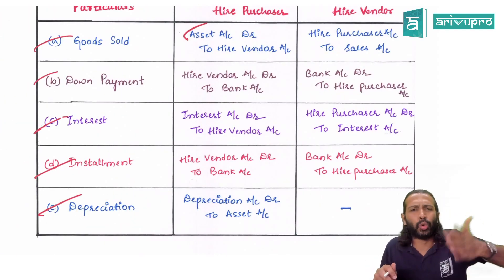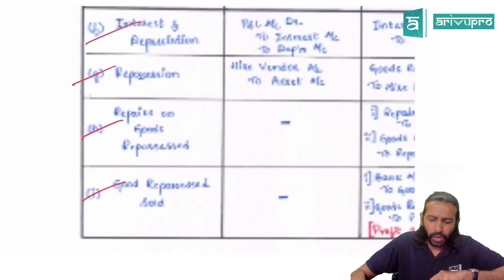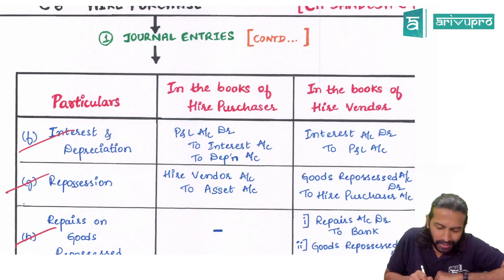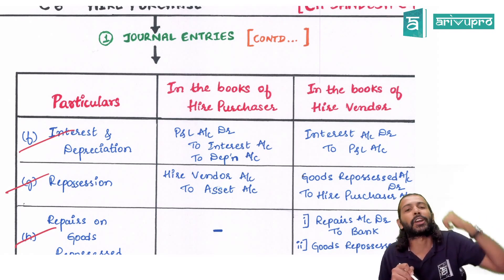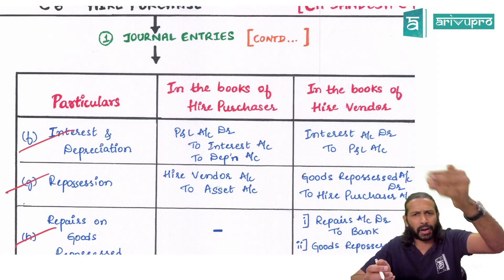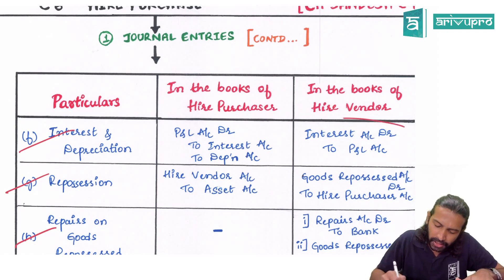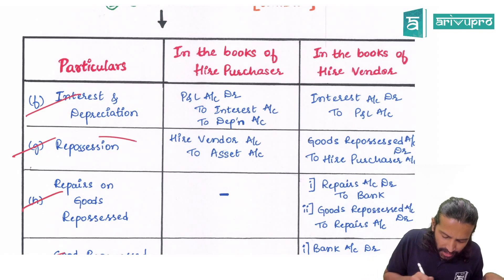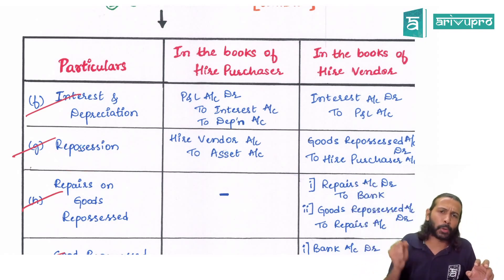For the hire vendor, the asset is goods — it is a purchase-and-sale of goods — so there is no depreciation for him. Regarding interest, for the hire vendor it is interest received, so it is income. The journal entry for transferring interest income to P&L is Interest Account debit to Profit and Loss Account. If the hire purchaser does not pay installment money, the hire vendor will repossess those goods.